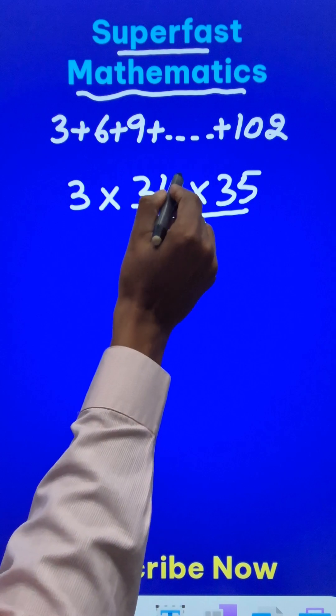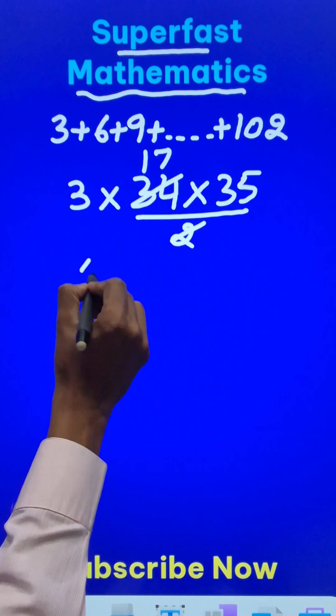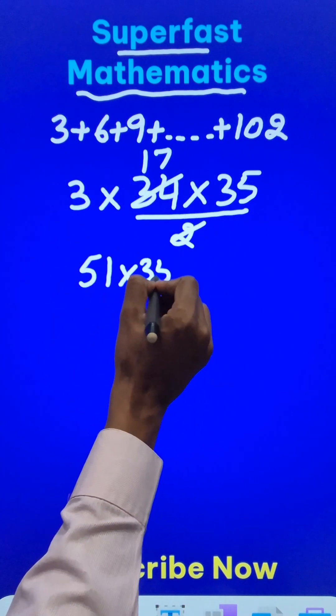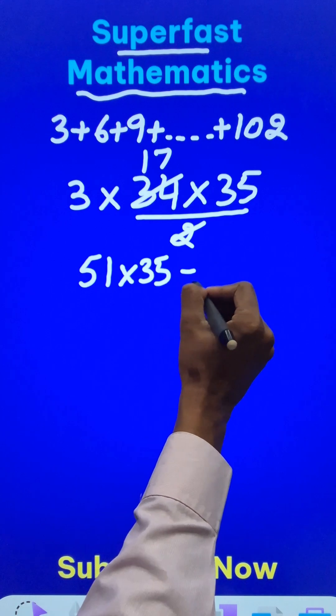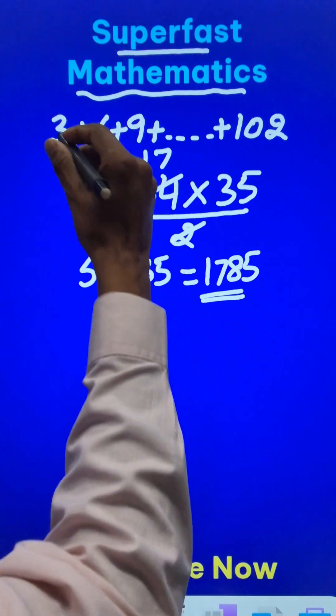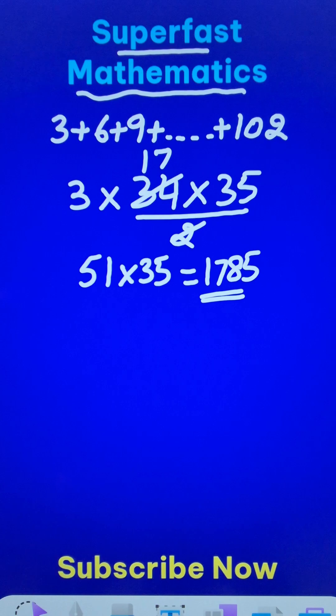If you cancel 2 and 34, you get 17 here and 3 times 17 is 51 multiplied by 35 will give you your answer and that is 1785. Now you can add the numbers manually and check, 1785 will be the answer.